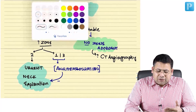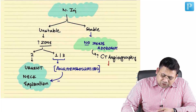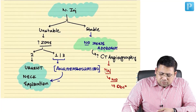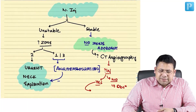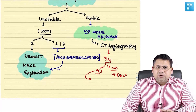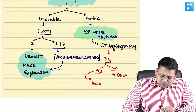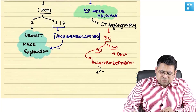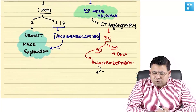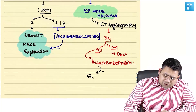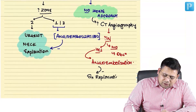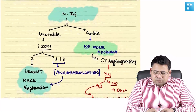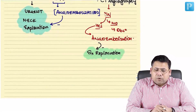On CT angiography, if there is no injury, proceed with observation. If there is injury, perform CT-guided angioembolization. If angioembolization fails, go for surgical exploration. This is the management algorithm for a stable patient with neck injury.